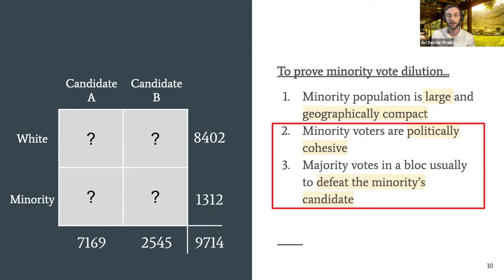With minority voters it's even harder to tell — it's possible that all 1,300 of them voted for candidate A or all 1,300 voted for candidate B. Requirements two and three of the Gingles test require that minority voters vote cohesively in favor of one candidate while the majority cohesively votes for the winning candidate. To see if this is happening, we need to fill in this table. Luckily, political science provides us with a tool called ecological inference, or EI for short.